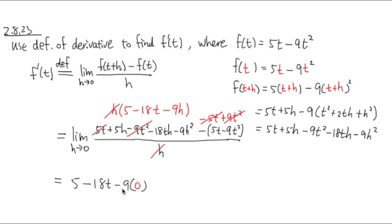But of course, negative 9 times 0 is just 0. So altogether, our answer, f prime of t is 5 minus 18t, by using the definition of derivative. This is it.